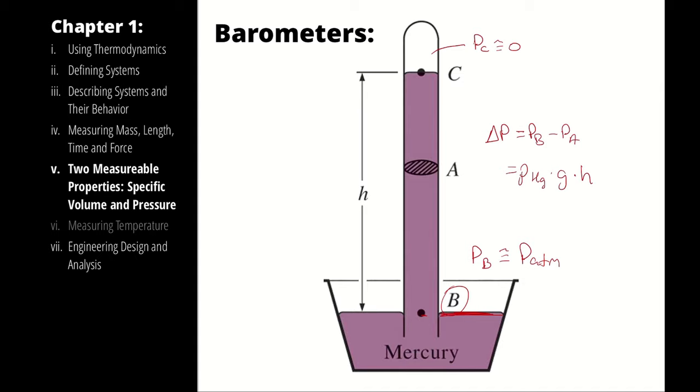Since the pressure at the top is effectively zero, that means Pb minus Pc is really just atmospheric pressure. So if you know the height of a column of mercury, you can calculate what the atmospheric pressure is.